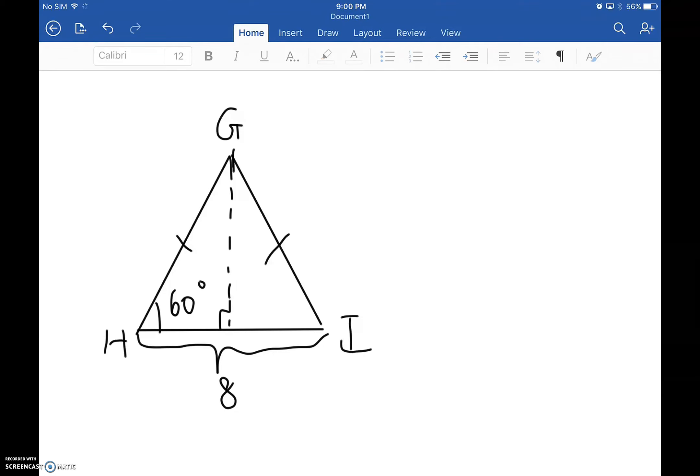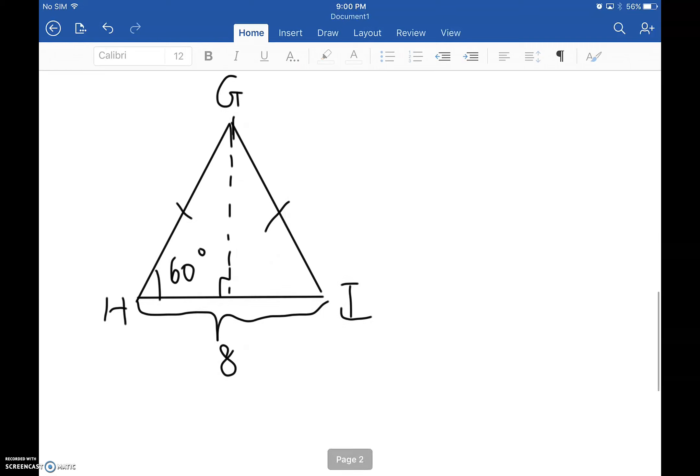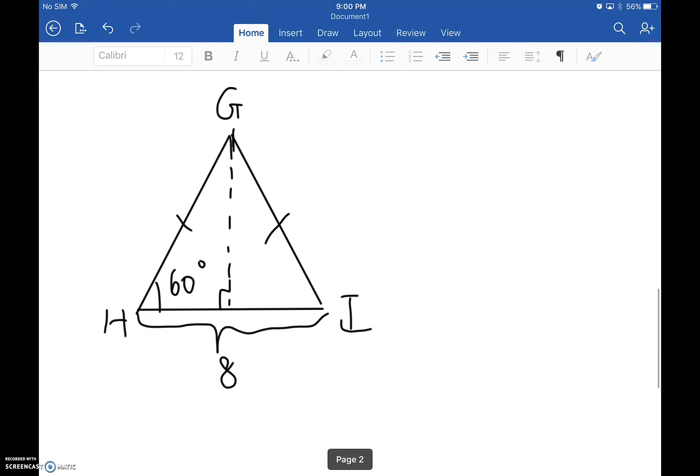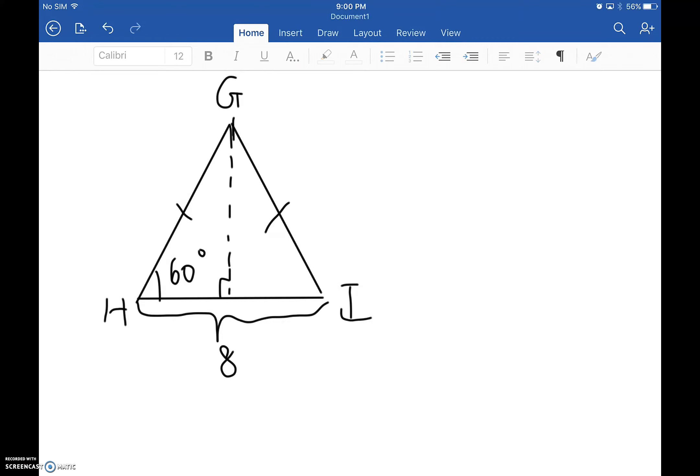And, as you can see this graph, the angle H is 60 degrees, and HI is 8 meters or centimeters, based on your choice. But, what we have to know is, the sides GH and GI are the same. So, what we know right now, just like, GH equals GI.